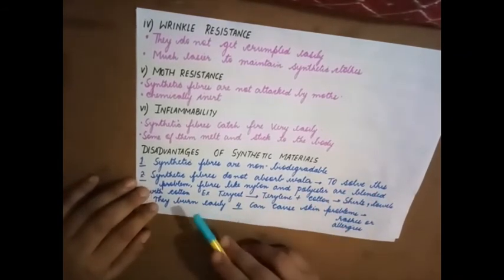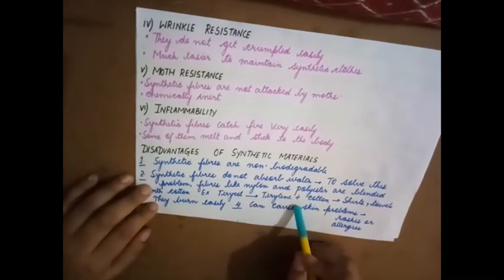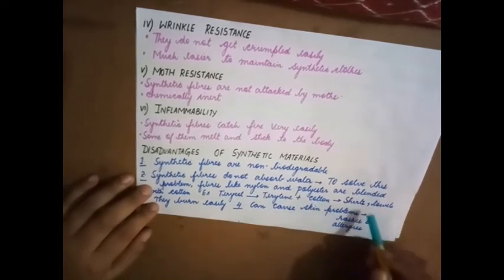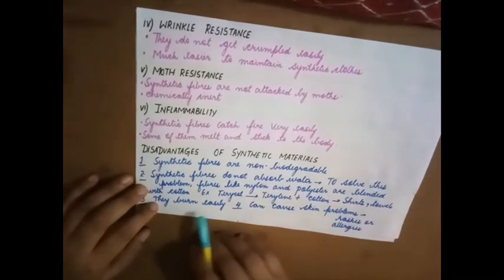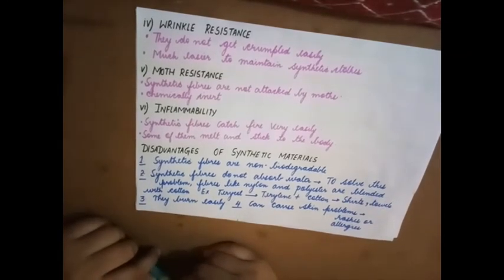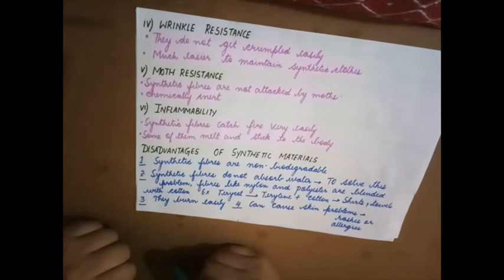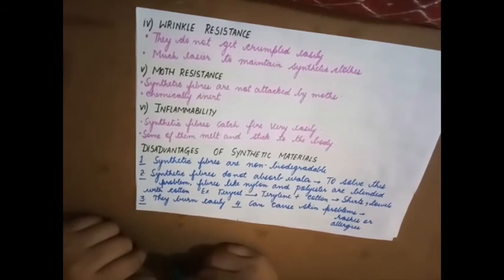To solve this problem, fibers like nylon and polyester are blended with cotton. Terricot, Terrylene is blended with cotton. It is used in shirts and towels since during the summer the sweat has to be absorbed. Now synthetic fibers, if they do not absorb the sweat, then there is no point in wearing them.